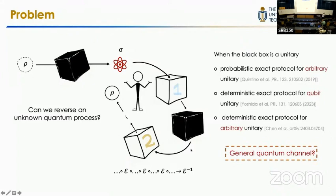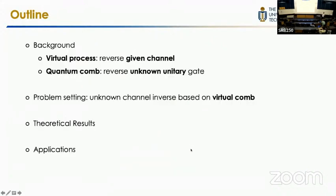If this black box is not just a unitary gate but a general quantum channel, is this still possible? One thing you will first notice is that the inverse of a quantum channel is usually not a CPTP map, so it is not actually a physical process. To deal with this, today I will first talk about two related concepts: the virtual process, which is used to reverse a given quantum channel, and quantum comb, which is used to reverse unknown unitary gates. We will then combine these ideas to have virtual comb, and use this to solve the problem of reversing the unknown channel.